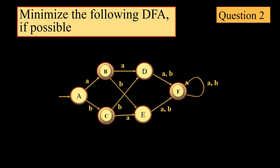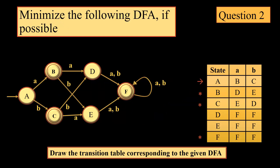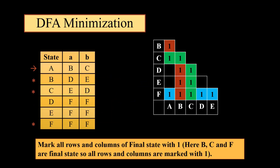Consider the next question. In this question we have three final states B, C, F and we have six states in all with A as the start state and sigma again is {A, B}. We will first draw the transition table corresponding to the given DFA. Once we have drawn the transition table, we will draw the 5×5 lower triangulation matrix, since we have six states.